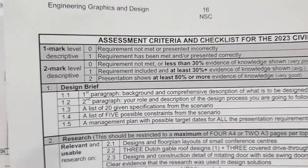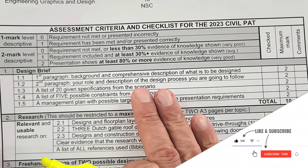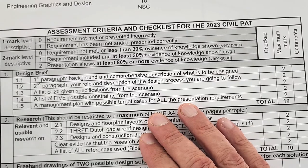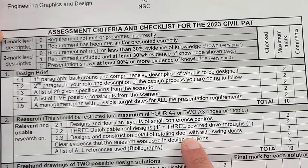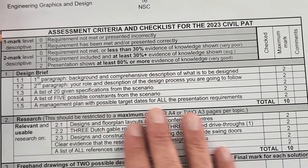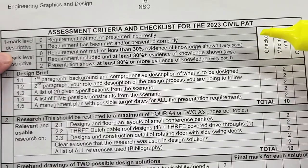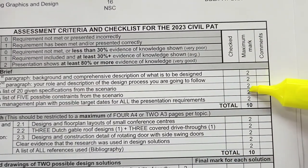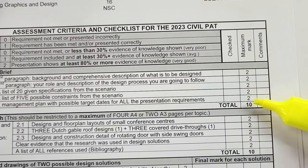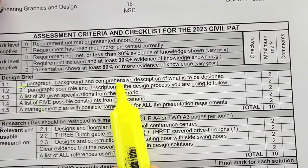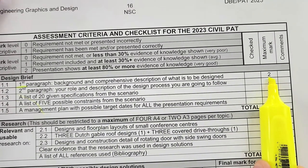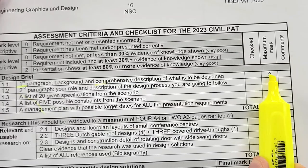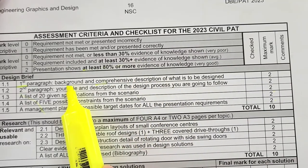Now for the second big tip: turn to page 16 of your PAT document. It says 'Assessment Criteria and Checklist for the 2023 PAT.' This is a two-page document specifically for learners — it's your checklist to ensure every component of the PAT is completed. There's a grading scale: most components are marked out of two. For example, if you complete more than 80% of a requirement you get two out of two.